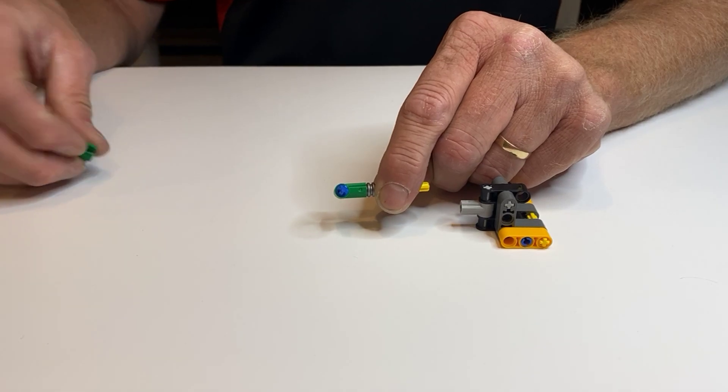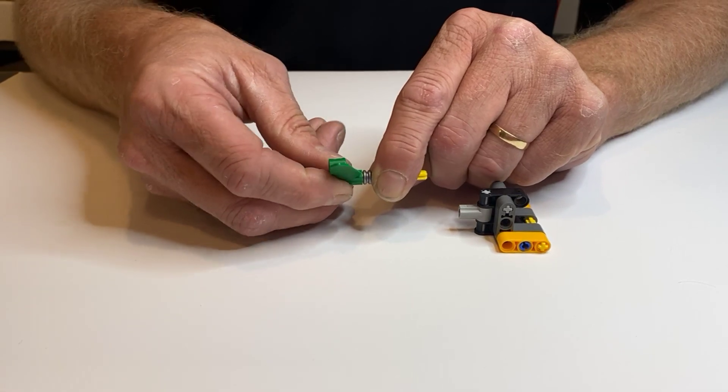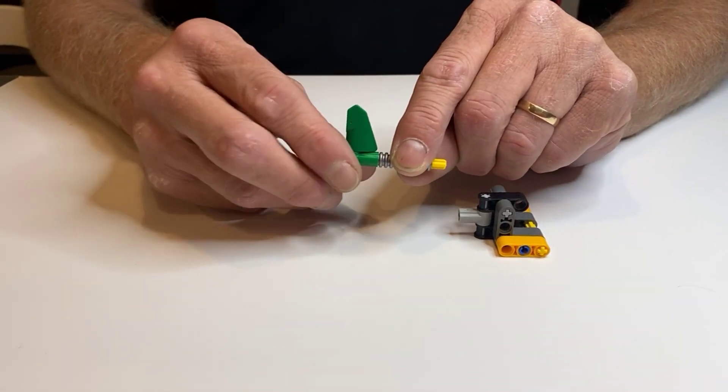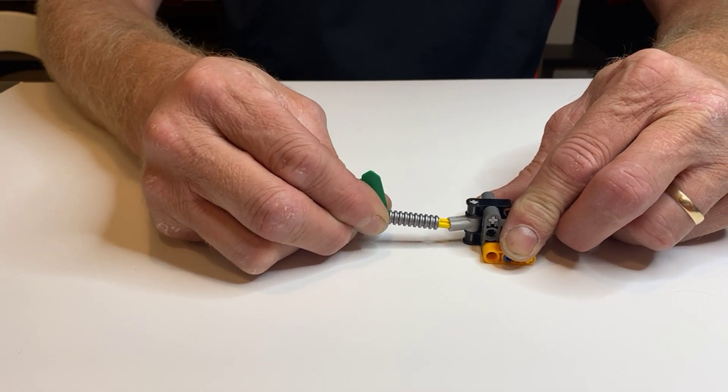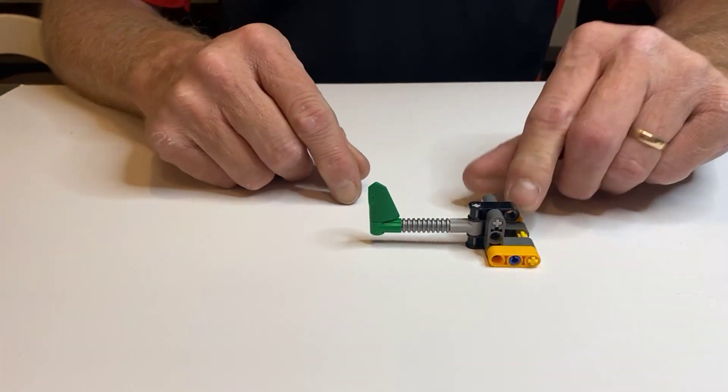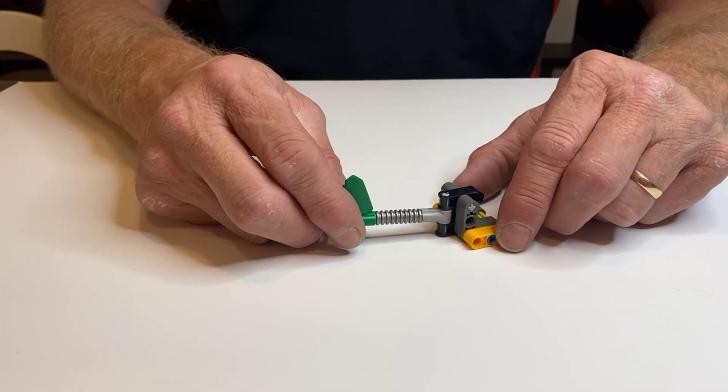Stick it in there, and then take your flag, put it on, rotate it so it looks like that. Stick the axle into the gray catch, and there it is.